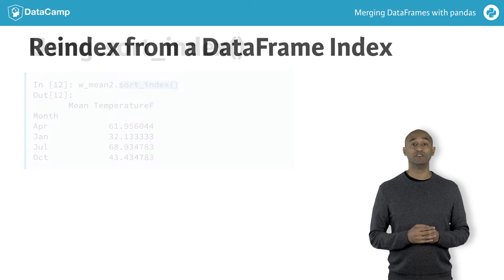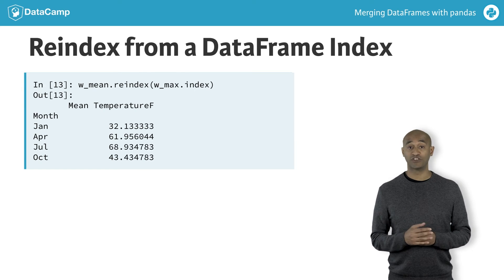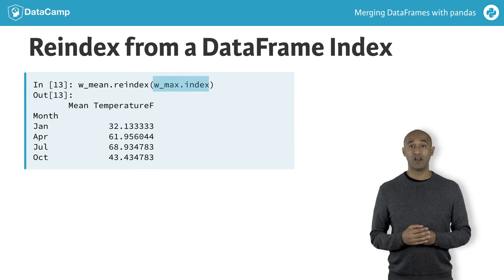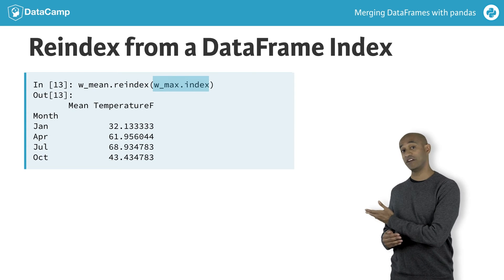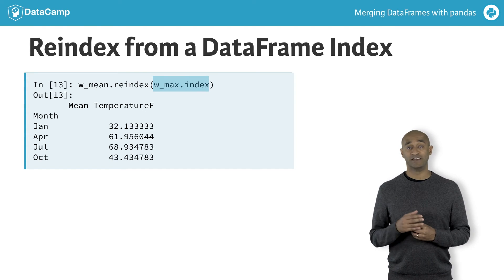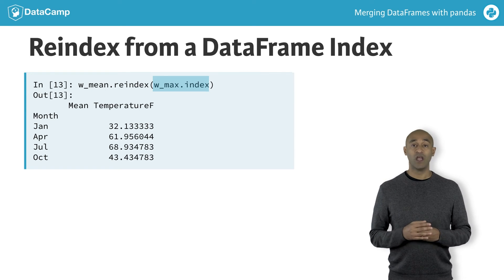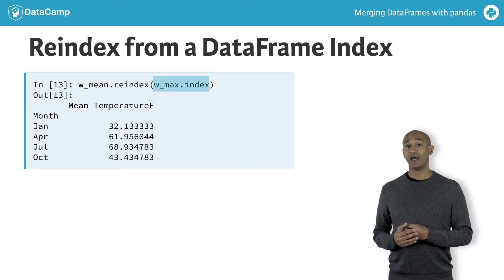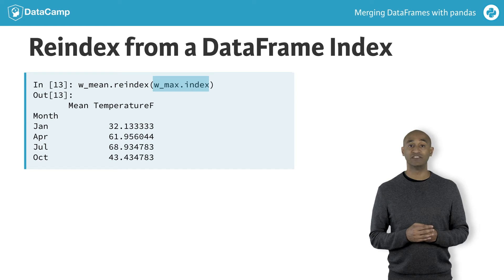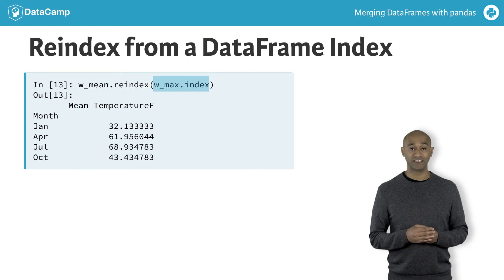The input argument to the reindex method can also be another data frame's index. For instance, here we use the index from W_max to reindex W_mean in chronological order. When a suitably indexed data frame is available, the reindex method spares us having to create a list manually or having to sort the index.